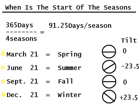This video is about when is the start of the four seasons. There are 365 days per year, and you divide that by four seasons and you get 91 and a quarter days per season.